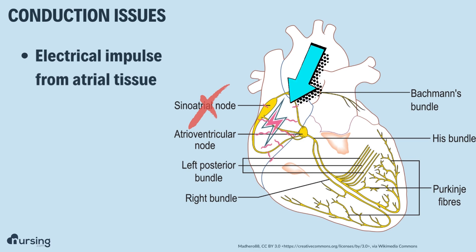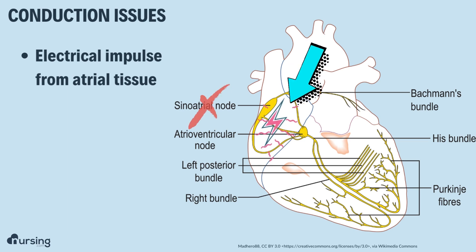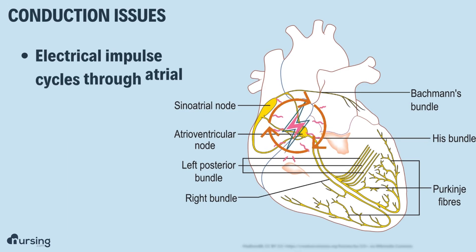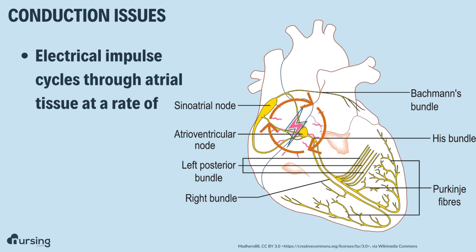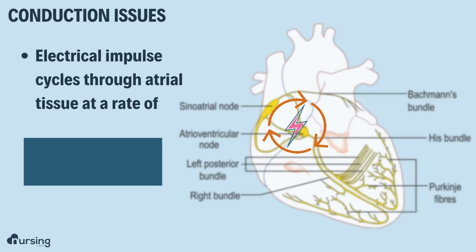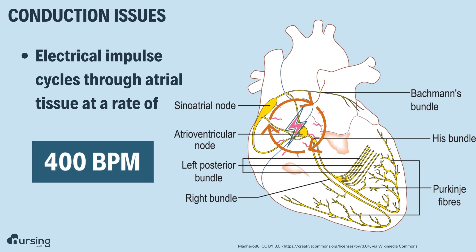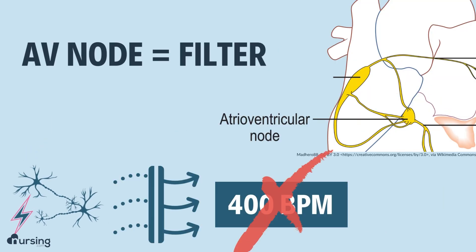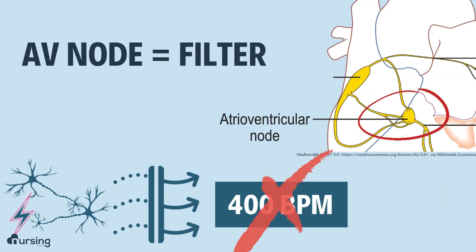What actually occurs because we have a dysfunctional SA node is our electrical impulse comes from the atrial tissue itself. And that is problematic. What this essentially causes to occur is a cyclical electrical impulse to be sent all throughout this atrial tissue at a rate of 400 beats per minute. Let's recall also that this AV node actually acts as a filter.